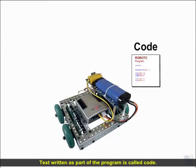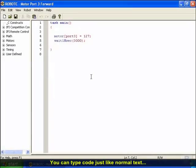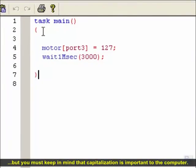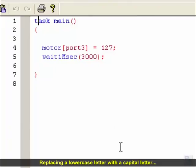Text written as part of the program is called code. You can type code just like normal text, but you must keep in mind that capitalization is important to the computer. Replacing a lowercase letter with a capital letter or a capital letter with a lowercase will cause the robot to become confused.